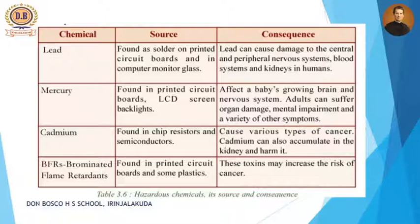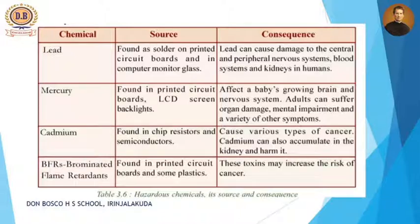Second one is mercury. It is found in printed circuits. So both lead and mercury are present in the computer's printed circuit board. Mercury is also found in LCD screen backlights. It can affect a baby's growing brain and nervous system. Adults can suffer organ damage, mental impairment, and a variety of other symptoms. Third one is cadmium. It is found in chip resistors and semiconductors — including semiconductor flash memory that we studied in secondary storage devices. Cadmium can cause various types of cancer and can also accumulate in the kidney and harm it.